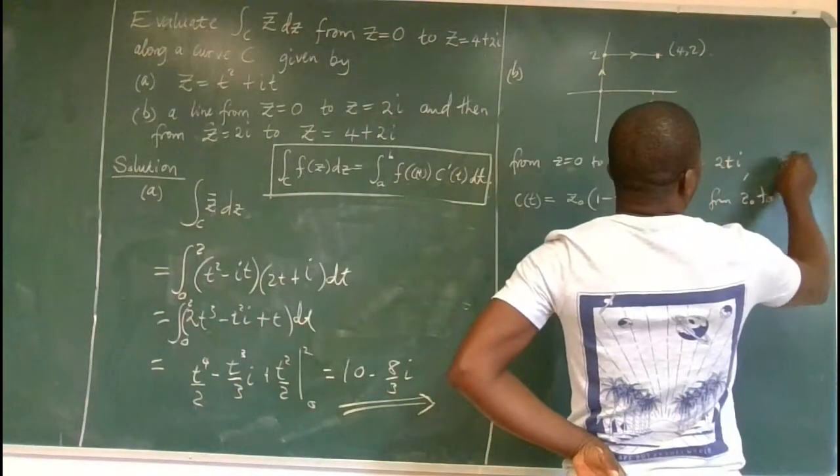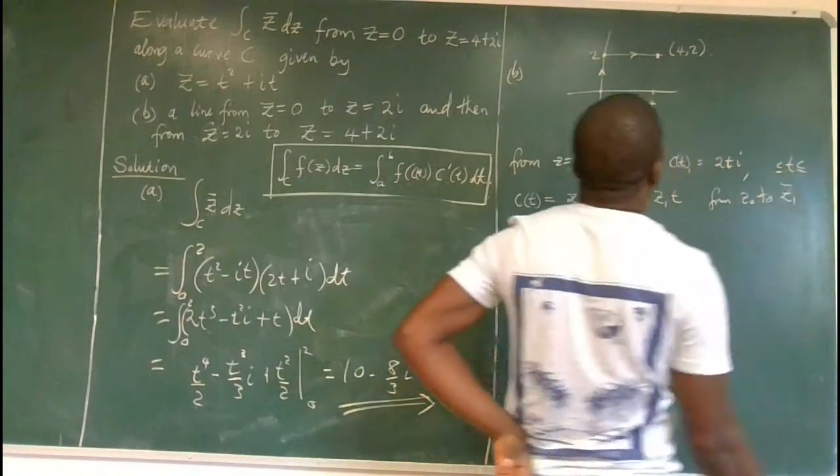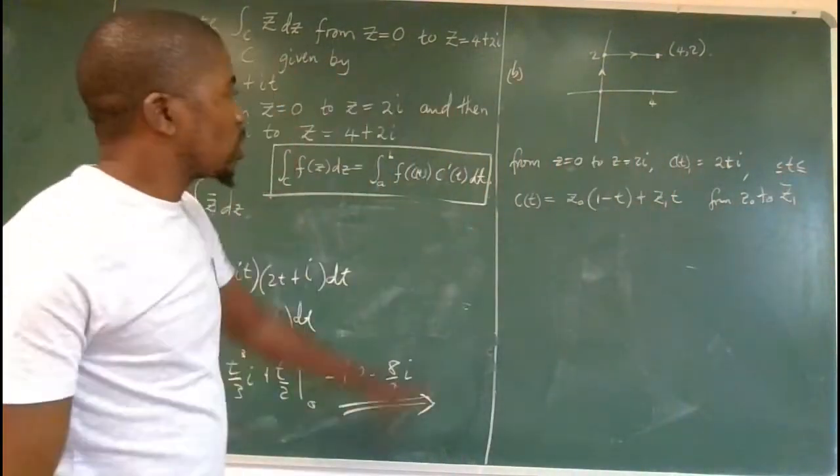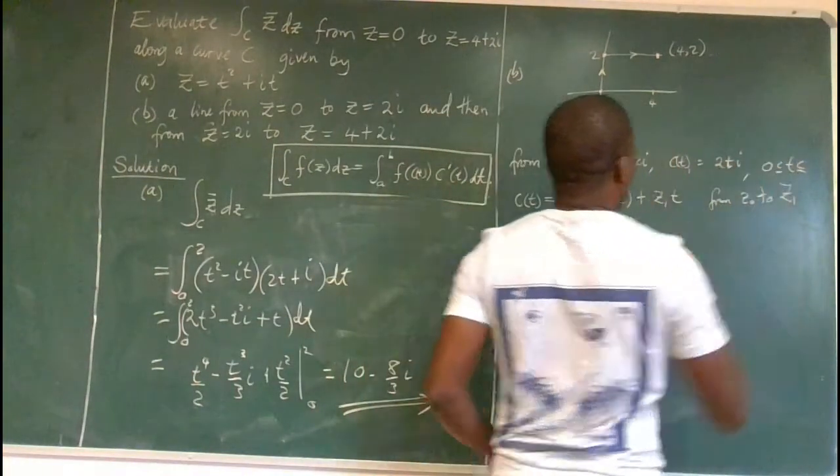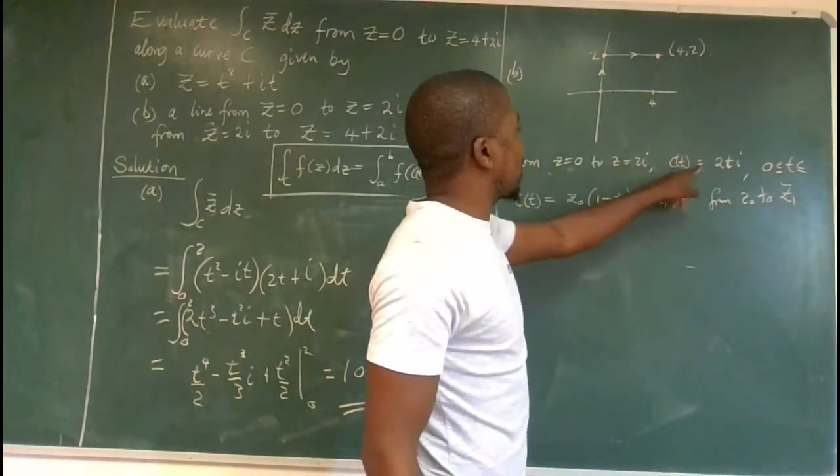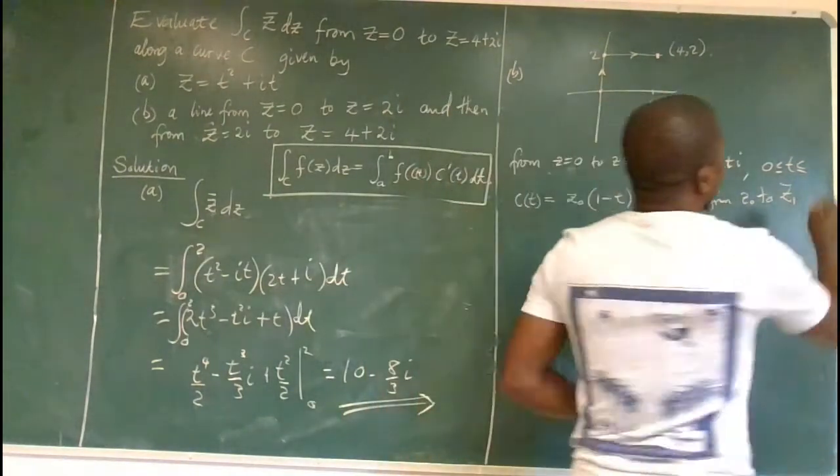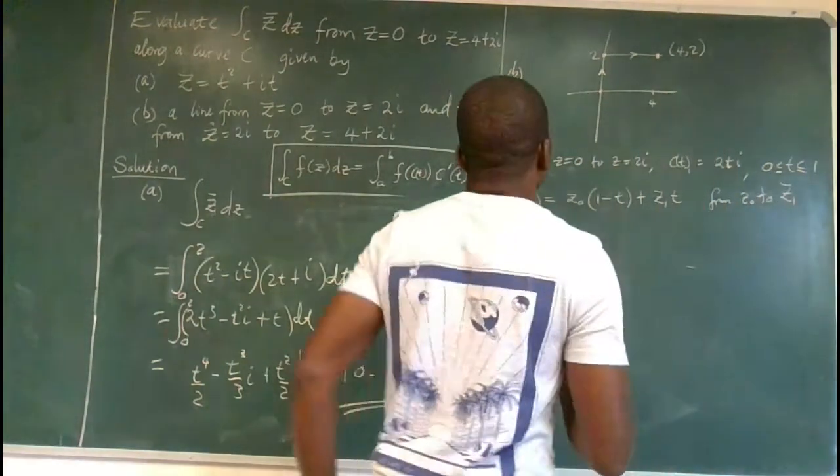And let's determine the range for t in that. So when this quantity is set to 0, you can clearly see that t is ranging from 0 to... If we set this side to 2i, then you can see that t is ranging from 0 to 1.